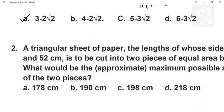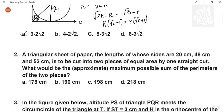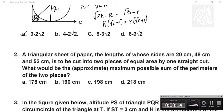The question says a triangular sheet of paper with sides 20, 48 and 52 is cut into two pieces of equal area by one straight cut. What would be the approximate maximum possible sum of perimeters of these two pieces? Tell me how do you do it?